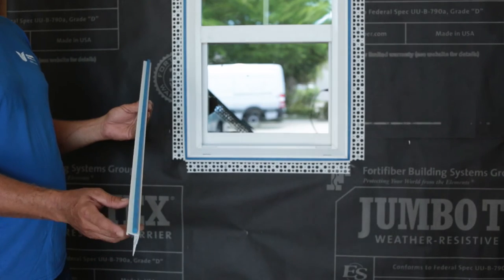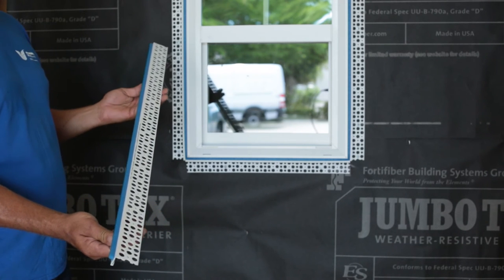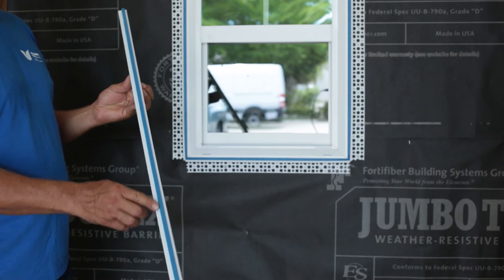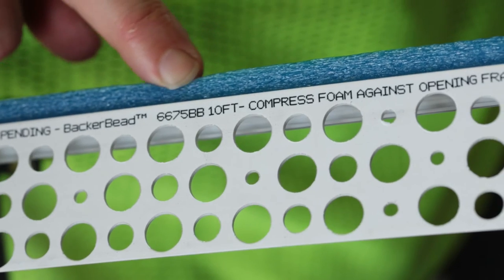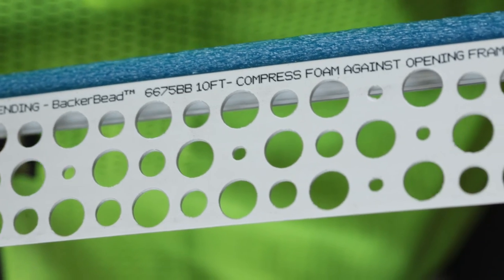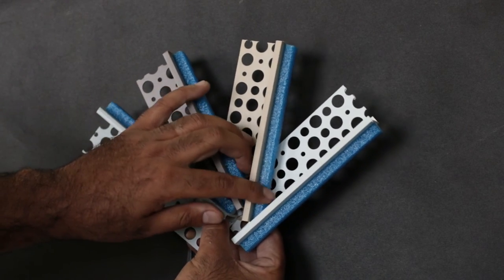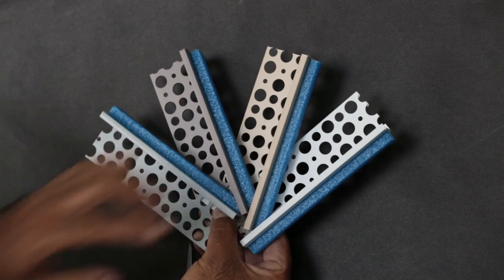Our backer bead is a PVC casing bead with closed-cell backer rod factory applied at the manufacturing plant. Ink jetted onto each piece are very simple instructions for the installer. The backer bead can be made in one of four casing bead colors: white, tan, gray, and brown.